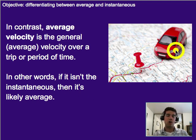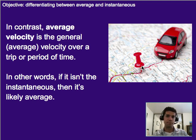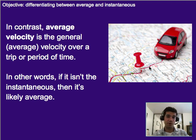So if we imagine a car going from one place to another, there'll be times where they slow down and times where they speed up, but their average velocity might be 60 miles an hour. It doesn't mean they didn't go 80 on the freeway at some point and then come to a stop sign and be zero, but that gives you the overall speed for that trip.